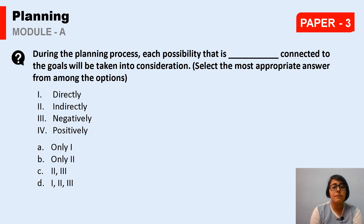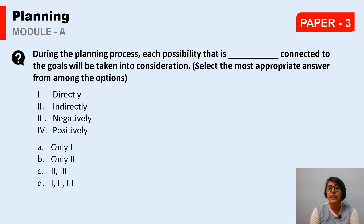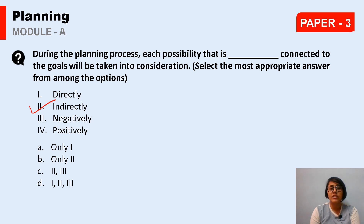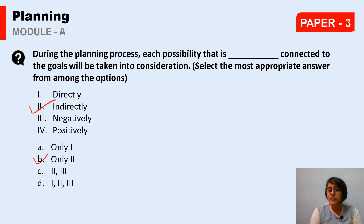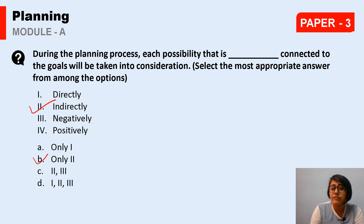The next question states: During the planning process, each possibility that is [blank] connected to the goals will be taken into consideration. We need to fill the gap, selecting from: directly, indirectly, negatively, or positively. The answer is indirectly — whatever activities are indirectly connected to the goals, all of these have to be included in the planning process. In the planning process, five key questions must be answered: What is to be done? Where? How? When? And by whom?